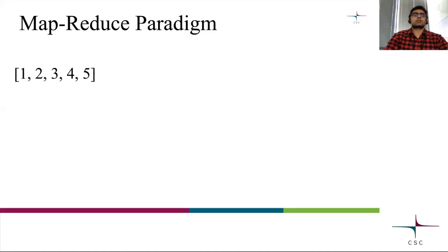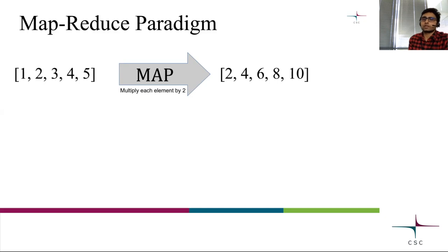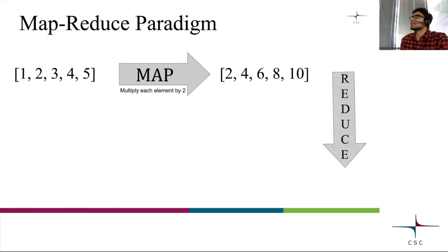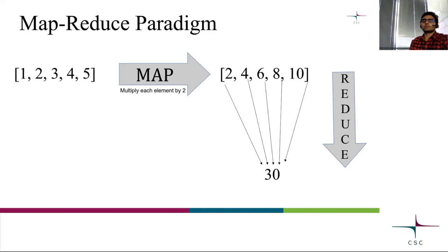For example, we have a dataset containing five values — 1, 2, 3, 4, 5 — and you apply a Map which says multiply each element by two. So 1 becomes 2, 2 becomes 4, and so on. This is the Map. Then you apply a Reduce with the criteria to add all the values together, and you get the result as 30. So Map transforms each element in the dataset, and Reduce combines the data according to some criteria. This is Map and Reduce.